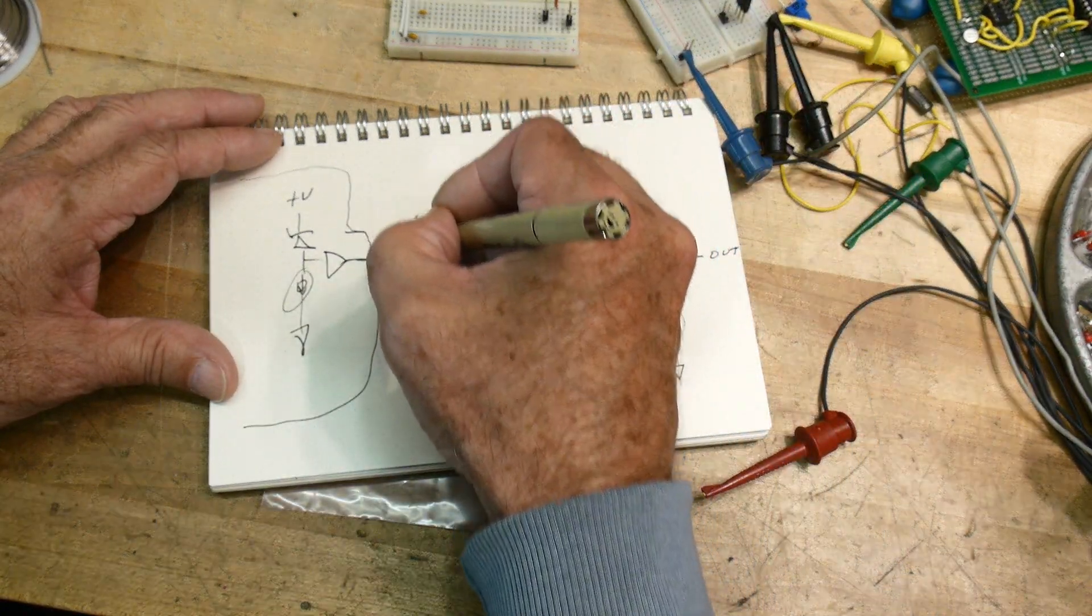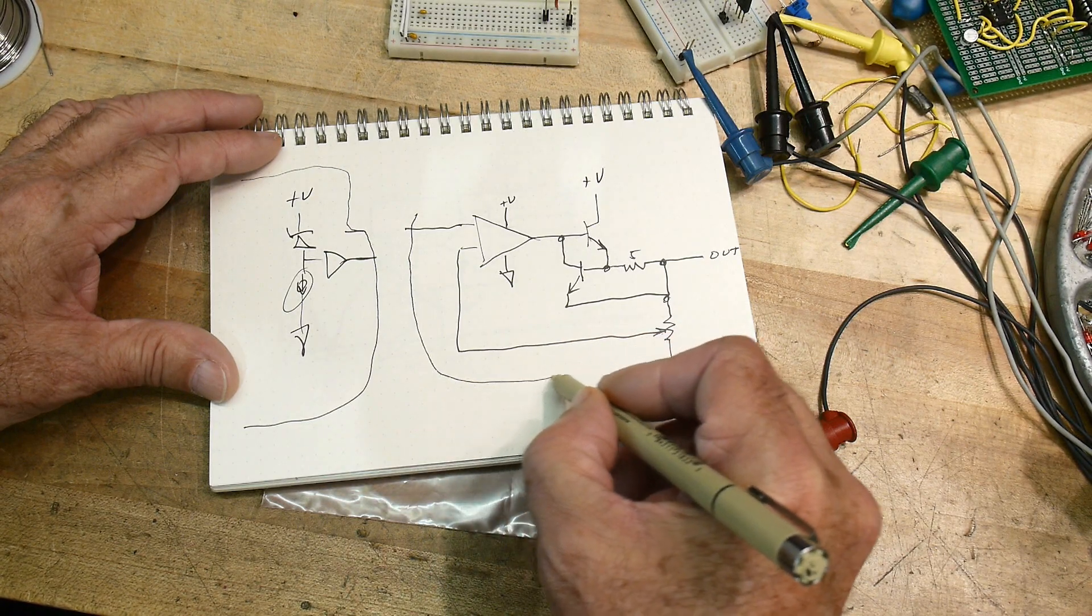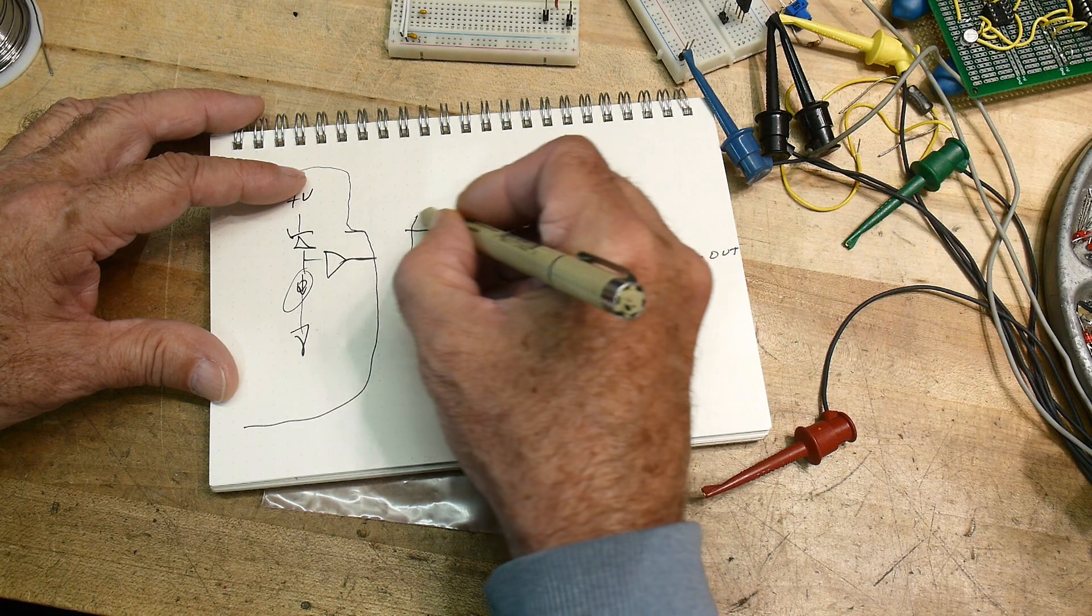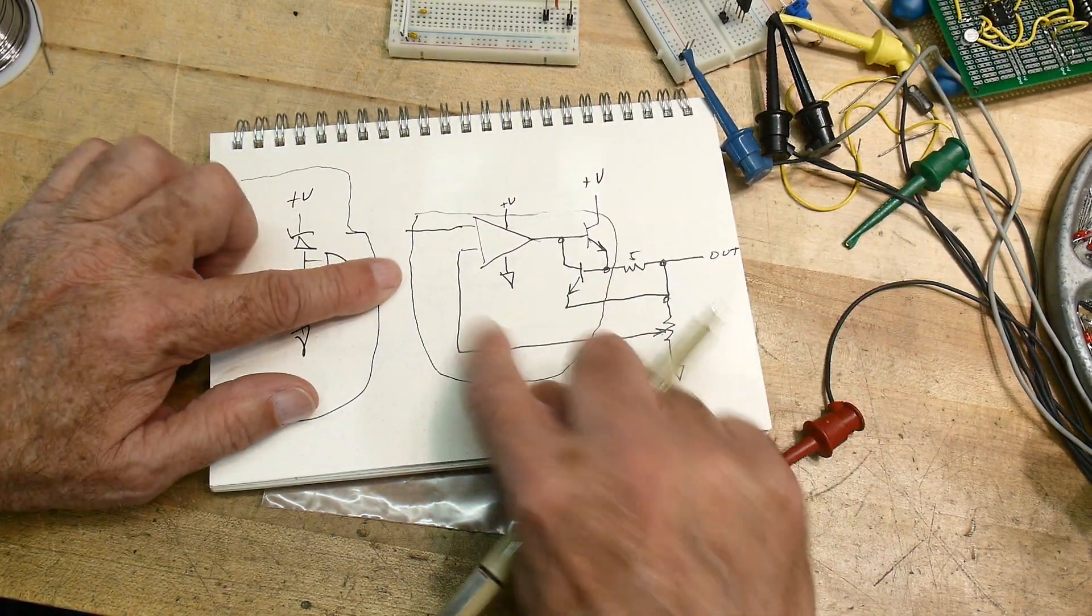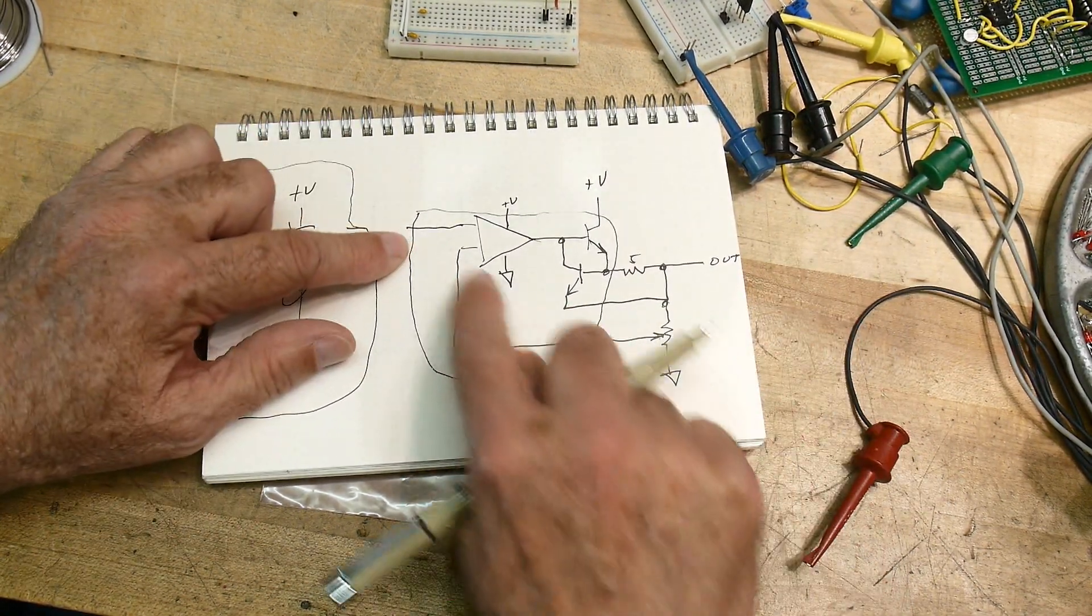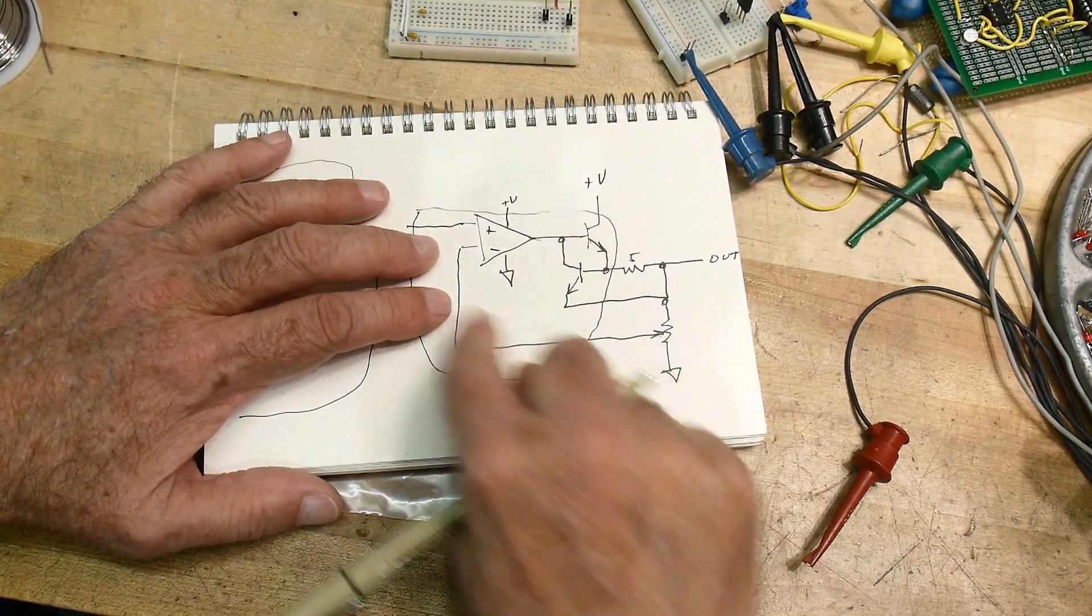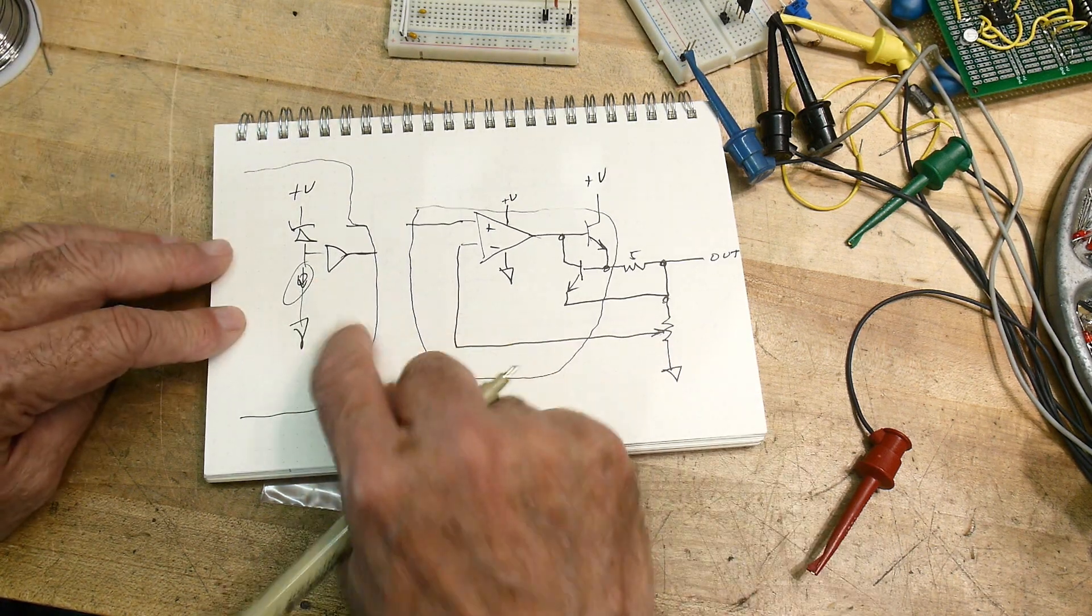And we're going to have a zener diode with a current source and we're going to have a buffer on it. This is also going to be plus V and ground. This is all in the chip. These parts are all in the chip, and these parts are all on the chip.